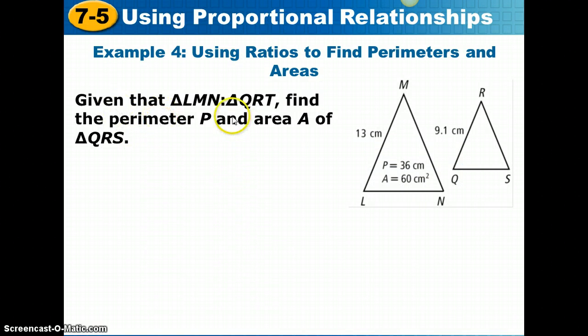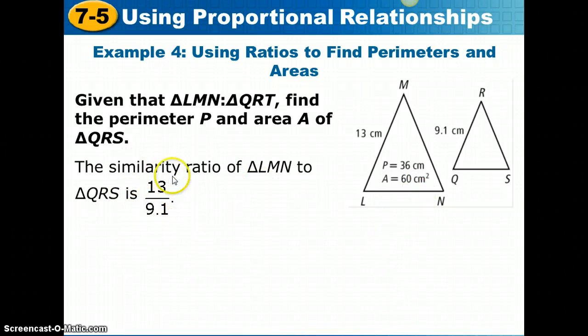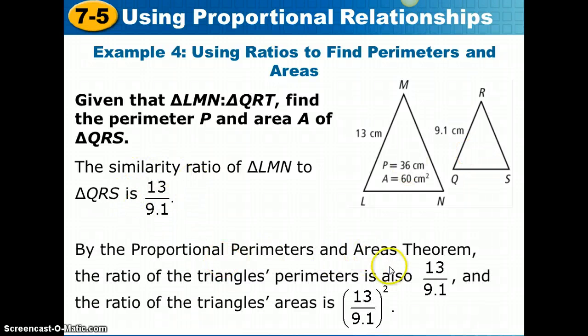Let's take a look at example 4. Given that triangle LMN is similar to triangle QRT, that's a typo, that's supposed to be the similar symbol. Find the perimeter and area of triangle QRS. We are given these triangles are similar. The similarity ratio compares corresponding sides. LM corresponds to RQ. So the similarity ratio is 13 to 9.1. And we can leave it written that way. The perimeter ratio is going to be the same. So to find the new perimeter, I'm going to use this ratio. The area ratio will be 13 over 9.1 squared. So to find the new area, I'm going to use this ratio, 13 over 9.1 all squared, which we can square the top and the bottom separately.